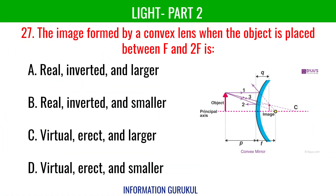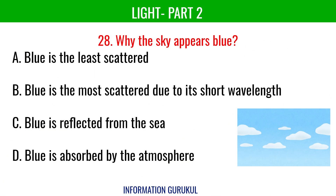The image formed by a convex lens when the object is placed between F and 2F is real, inverted and larger. Why does the sky appear blue? Blue is the most scattered due to its short wavelength.